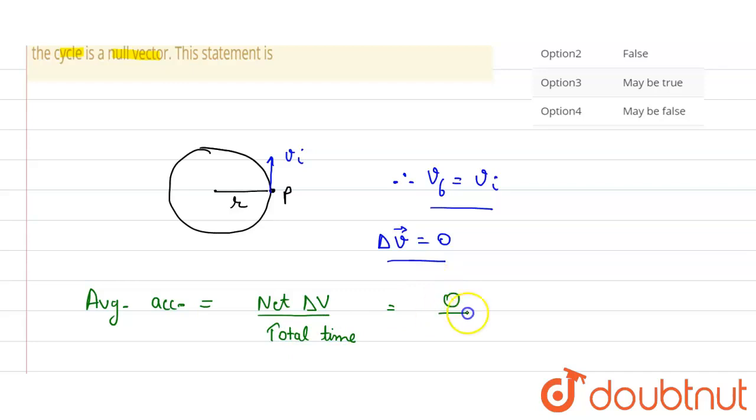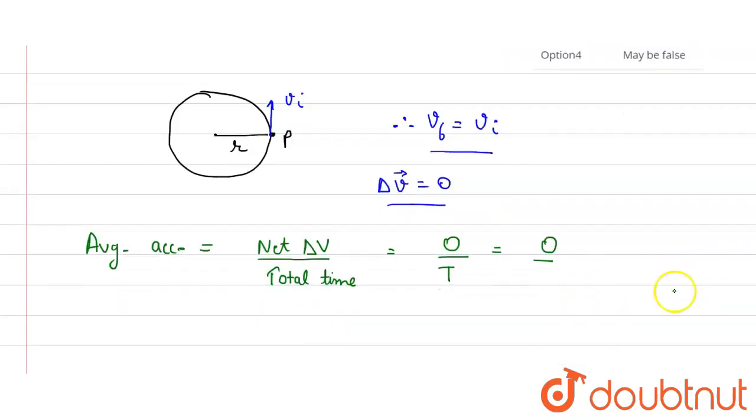So the change in velocity is zero, let us suppose time is t, so the answer will be zero. So the average acceleration will be zero. Okay, so average acceleration of particle is a null vector in uniform circular motion.